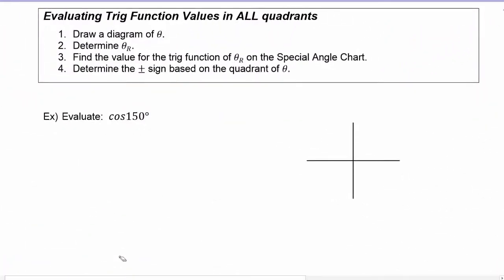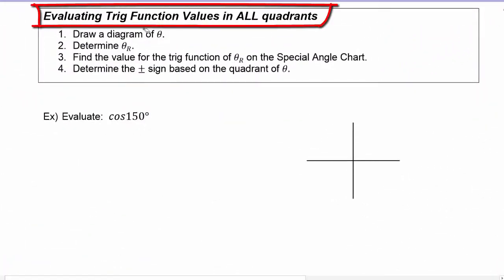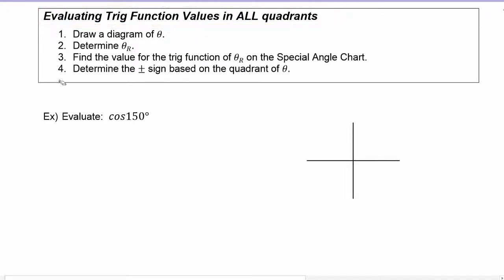Next, we're going to learn a method for evaluating trig function values in all quadrants. There are four steps to this method, and the best way to learn it is to work an example problem. In this first example, we have to evaluate the cosine of 150 degrees.